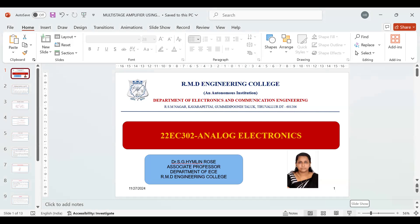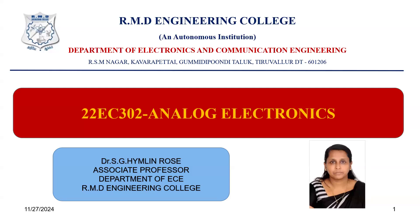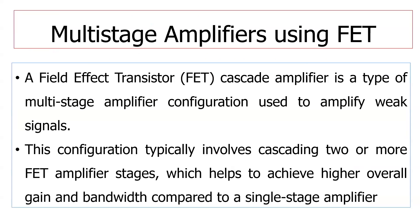Good morning. Today we will discuss multi-stage FET amplifiers in analog electronics. In multi-stage BJT amplifiers you have cascade and cascode amplifiers and the Darlington pair. In multi-stage FET amplifiers we are going to discuss the cascade and cascode amplifier. The FET cascaded amplifier is a type of multi-stage amplifier used for amplification of weak signals, cascading several amplifier stages to enhance amplification and increase gain and bandwidth compared to a single stage amplifier.